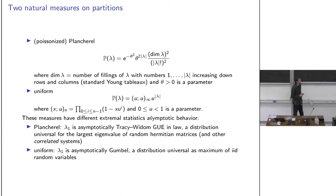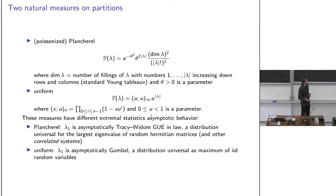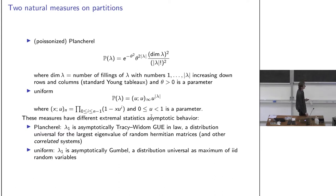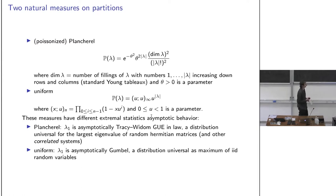Another interesting measure from representation theory and mathematical physics is the Plancherel measure. It involves the square of the dimension of an irreducible representation of the symmetric group on |λ| letters, which equals the size of λ.